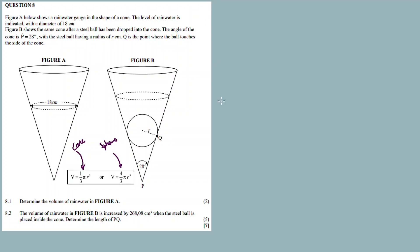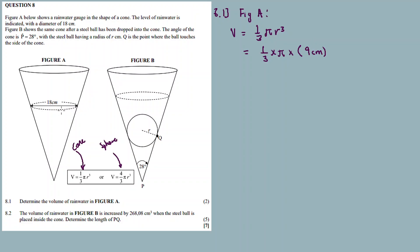Question 8.1: determine the volume of rainwater in Figure A. For Figure A, we use the volume formula for a cone: V = one-third times pi times r squared times h. We just plug in the values. The diameter is 18 centimeters, so the radius is 9 centimeters.